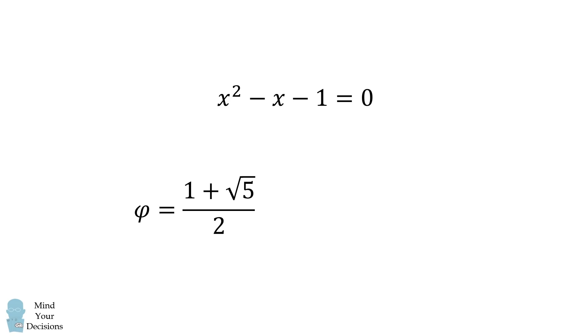One is the golden ratio, 1 plus the square root of 5 all over 2, and the other is the negative reciprocal of the golden ratio, 1 minus the square root of 5 over 2.